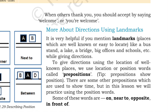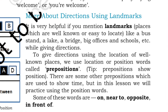अगर आप किसी को directions देते हो, किसी जाने-माने जगह के बारे में, तो आप location और position का use करते हो। इनको English में क्या कहा जाता है? — Prepositions. Prepositions जो position show करती हैं। इस session के अंदर हम position words practice करेंगे — जैसे कि 'on', 'near to', 'opposite', या 'in front of'।